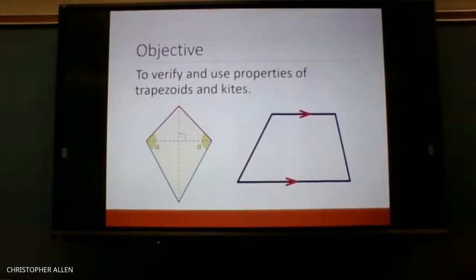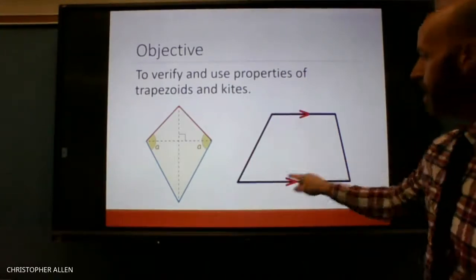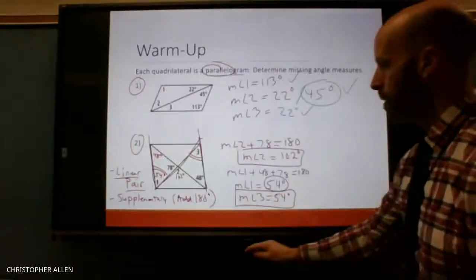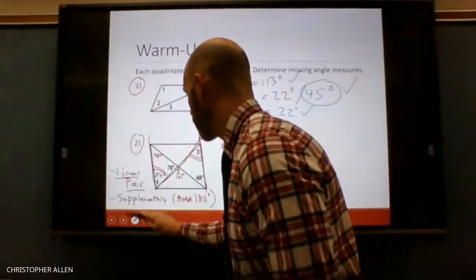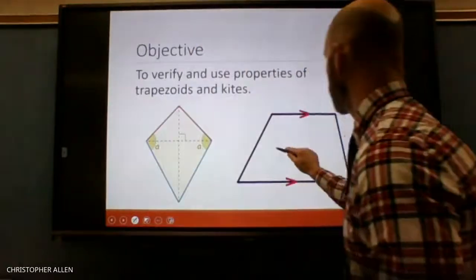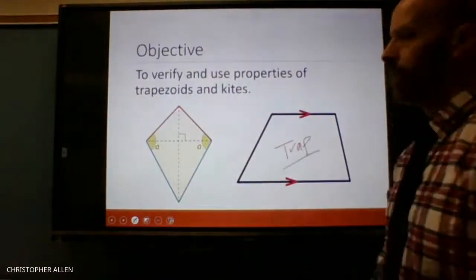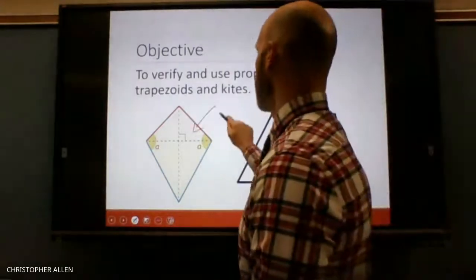Chapter 6. Our objective today is to verify and use properties of trapezoids. This here is a trapezoid. This over here is what we call a kite.